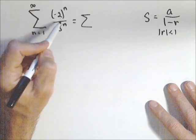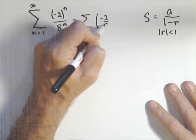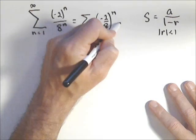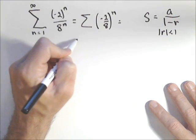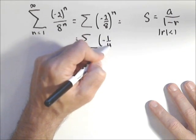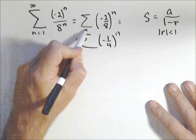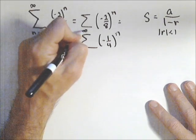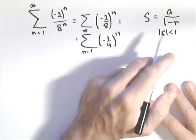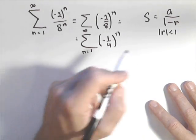By properties of exponents, since these are both to the n, I can write this as negative two over eight to the n, or negative one-fourth to the n. The absolute value of that is in between negative one and one. So this will, so our formula applies.